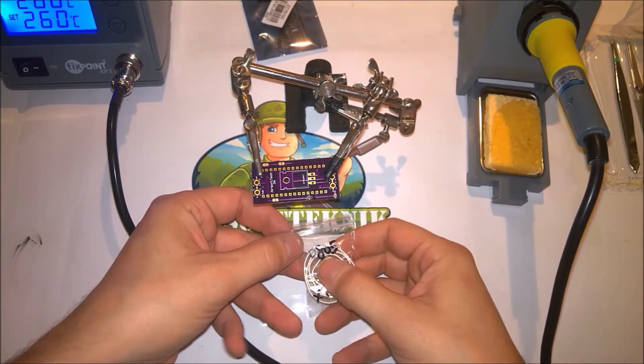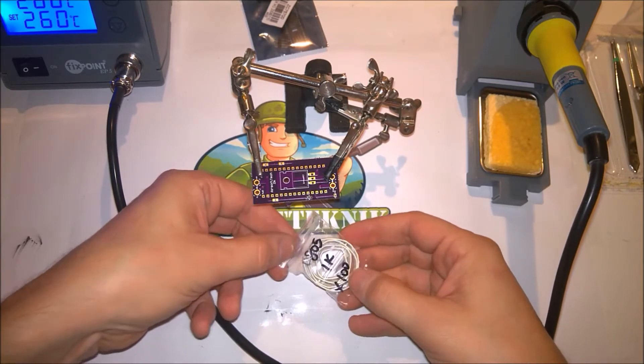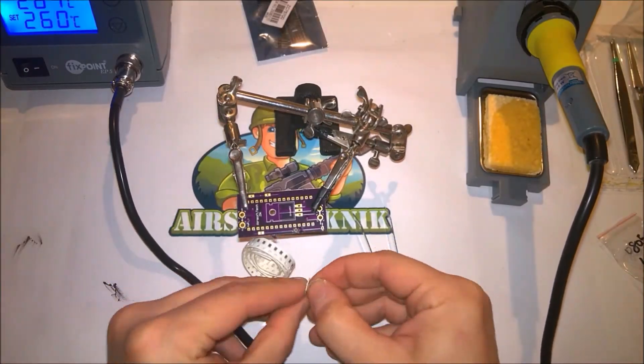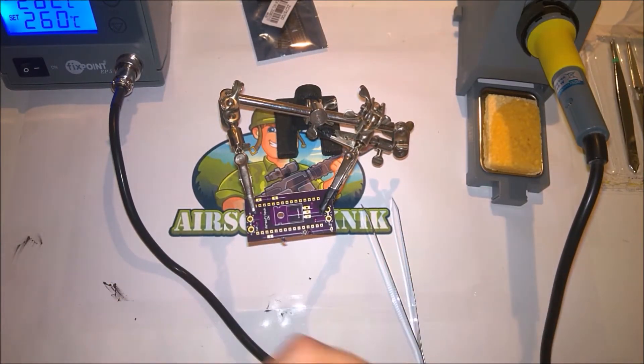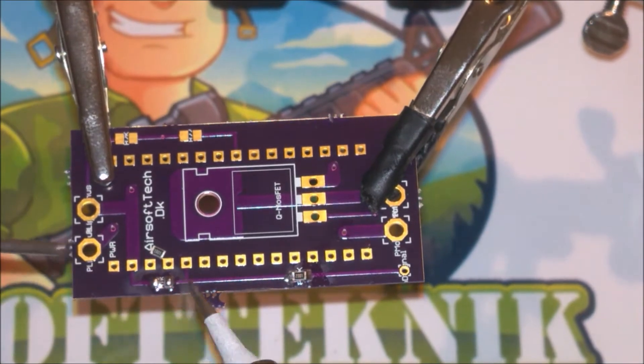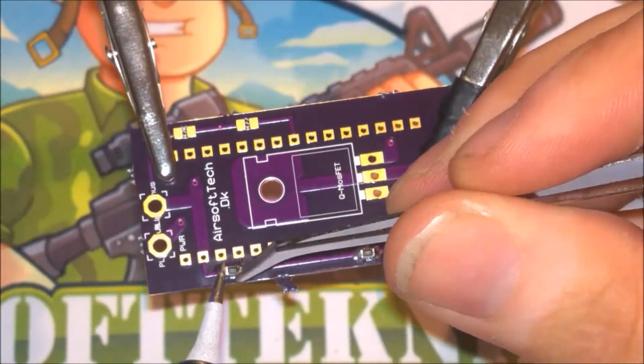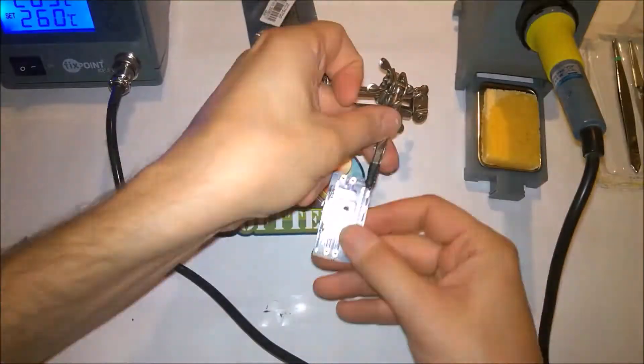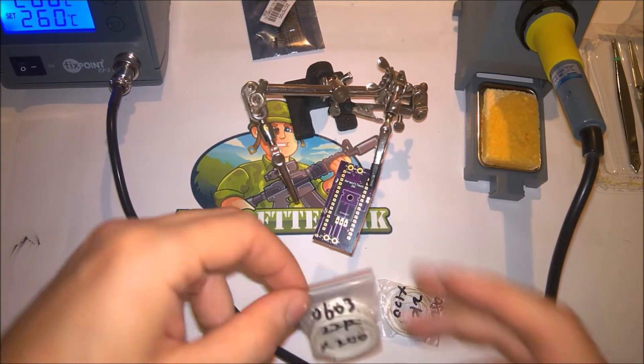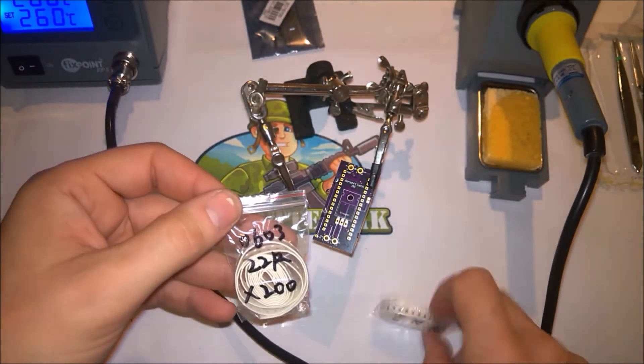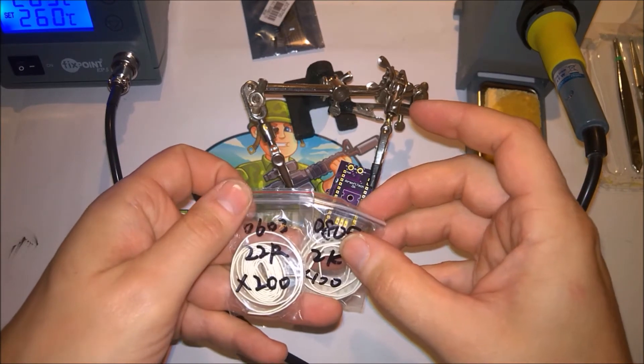The size of resistor that I use is called a 0805 size and that is a surface mount resistor. Now I will just follow the same steps to solder on the rest of the resistors. Some of the resistors that I have are even smaller than the 0805 and that size is called 0603.